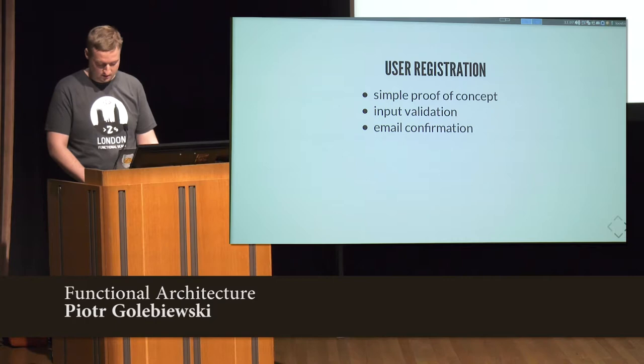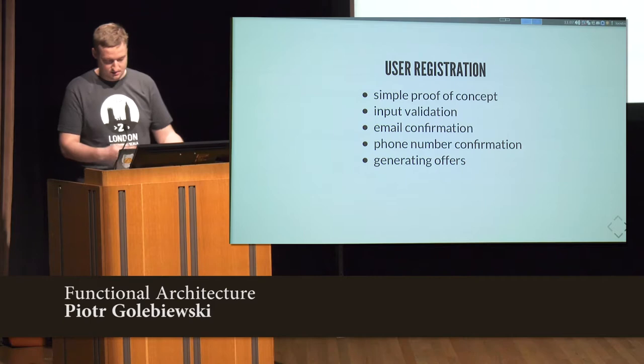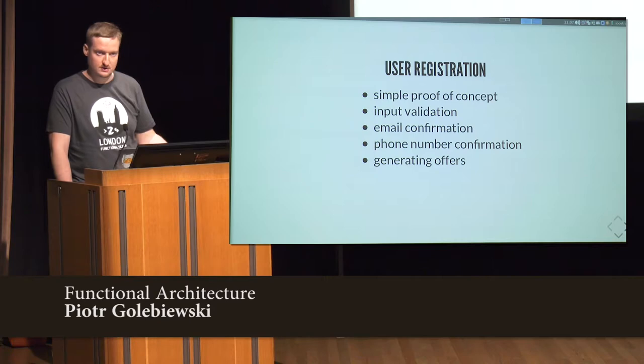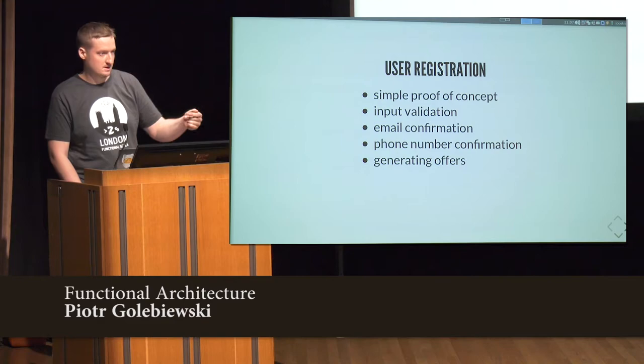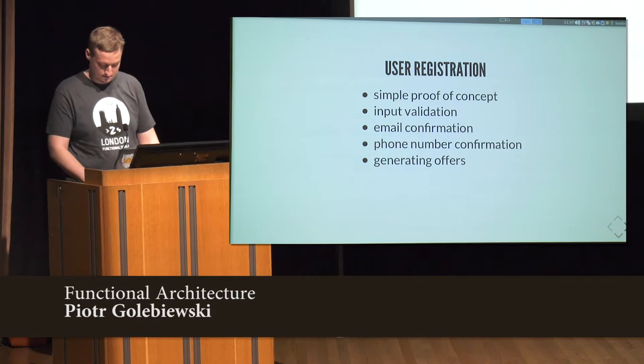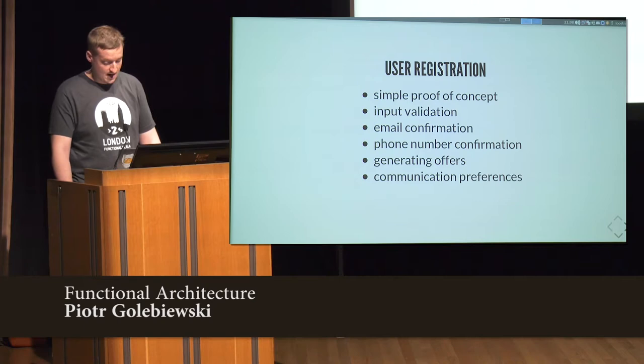Then new requirements came in and we wanted to add email confirmation, then phone number confirmation. It was a loyalty platform. There were some offers that we were having for each user, and the assumption in the whole system was that these offers are always there — new offers are generated at the beginning of each month. So when a new user came in, we had to actually generate these offers for him as well, so that our invariant stays true in the system.